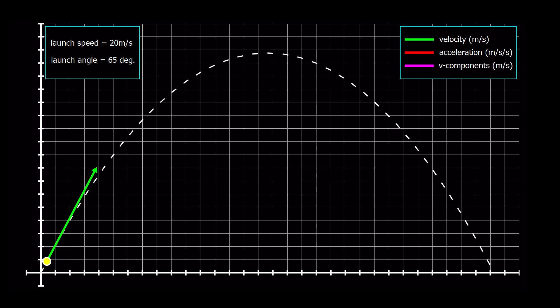So as we watch our projectile motion begin, we have our velocity vector shown in green, and that's always going to be tangential to the trajectory of the object.